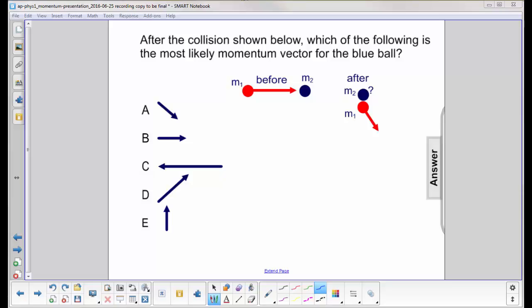After the collision shown below, which of the following is the most likely momentum vector for the blue ball? Our initial condition just shows momentum in the x direction. That means we cannot have any momentum in the y direction after the collision.